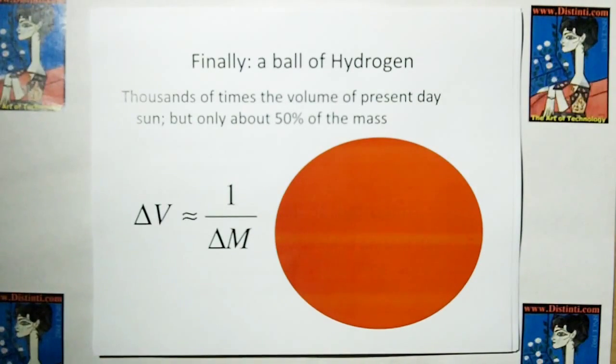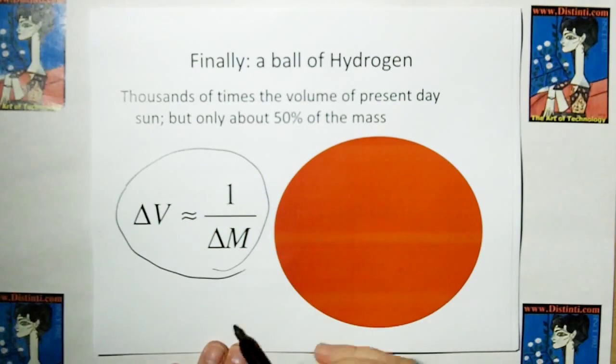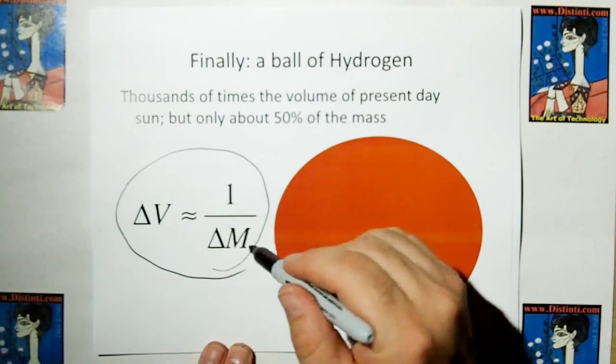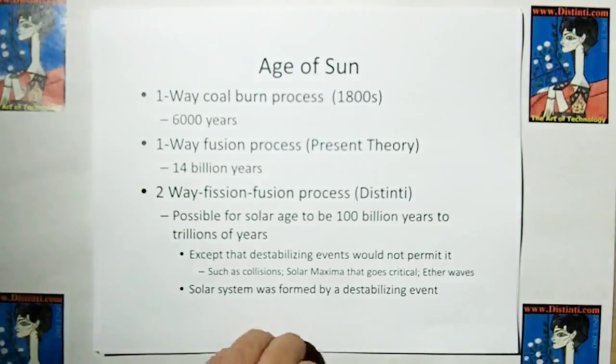Finally, the Sun will end up as a complete ball of hydrogen. Thousands of times the volume of the present-day Sun, but only about 50% of the mass. Remember this relationship from the Earth. When the Sun is going to grow in volume, the mass has to go down.